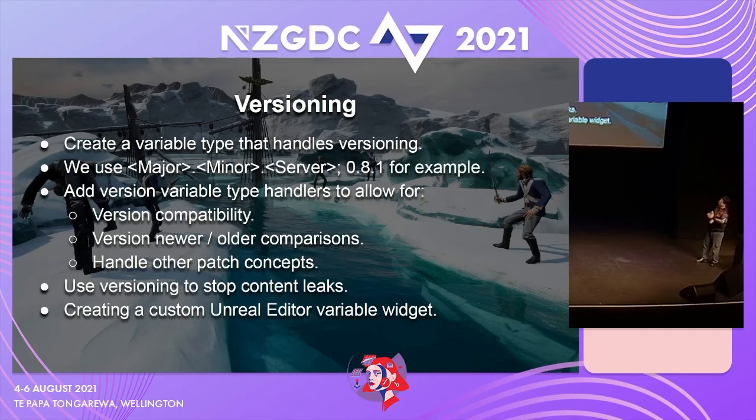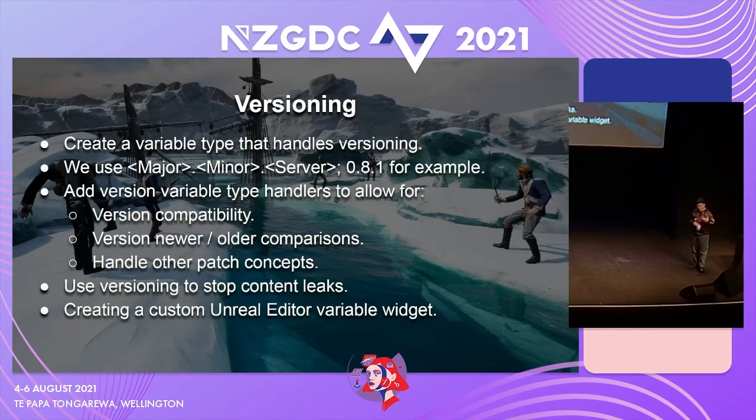Why major, minor, and server? The server number is only for us — it's never client-facing. We just know what version the servers are running. When rolling out an out-of-band fix, we can tell if a server is running a certain version with players in it and schedule it for an update. The minor is really for the piracy problem — we'd push a minor update and claim we optimized something, allowing us to change that version check.